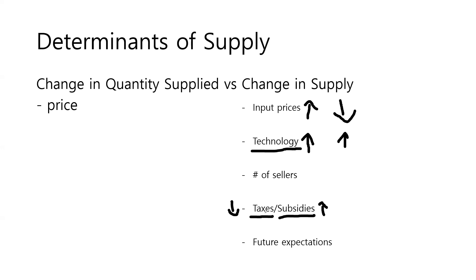The fifth factor is future expectations about price, and this is the opposite of demand. If we expect the price to increase in the future, supply right now will likely decrease, since sellers can sell at a higher price next week or next month. On the other hand, if future expectations suggest the price will go down, supply right now will increase, since sellers can get a higher price now or never.